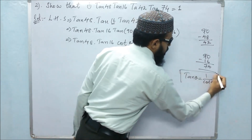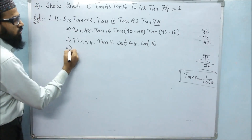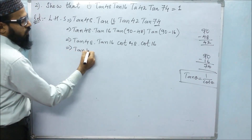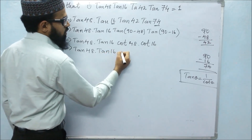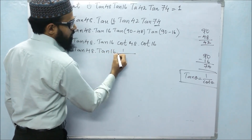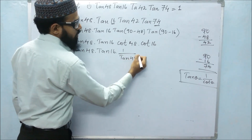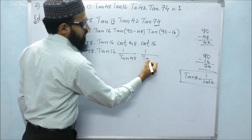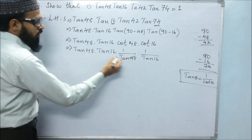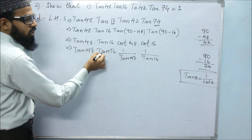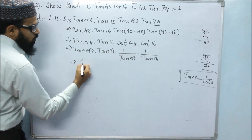So we have tan48 × tan16 × cot48 × cot16, which equals tan48 × tan16 × (1/tan48) × (1/tan16). We can cancel tan48 with 1/tan48 — ones are 1 — and tan16 with 1/tan16 — ones are 1. So the result is 1 × 1 = 1.